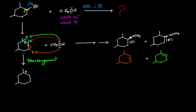This is called the rearrangement step. It happens because the original carbocation is on a second degree carbon, whereas after rearrangement it sits on a third degree carbon. A carbocation on a third degree carbon is more stable than on a second degree carbon, so the system rearranges to give the more stable carbocation.